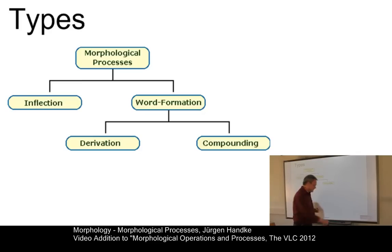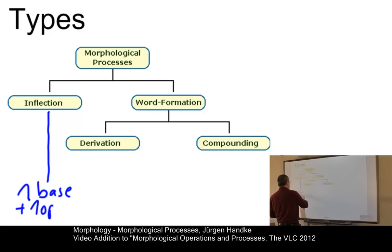Now, in inflection, and this is the formal definition, we normally have one base form and one operation that can be applied to this base form. Word formation processes involve a base form that is modified either by a morphological operation or you have a process where you simply concatenate one base form with several other base forms. The formal subdivision between the main types, derivation on the one hand and compounding on the other, is as follows.